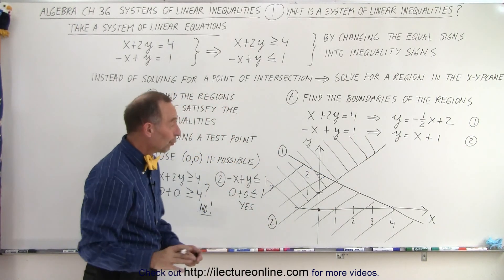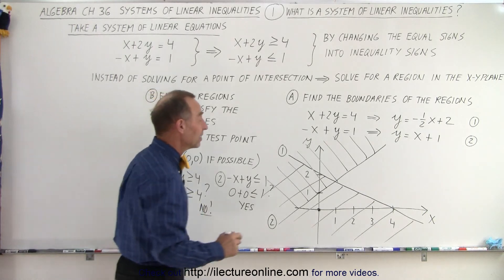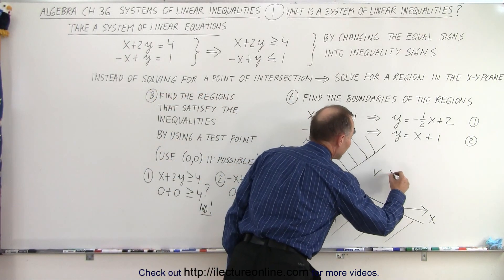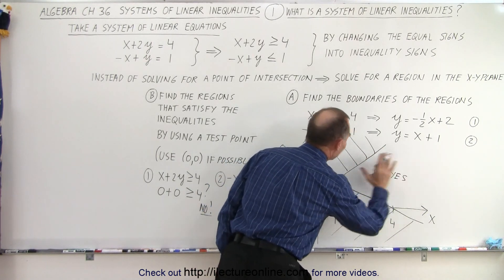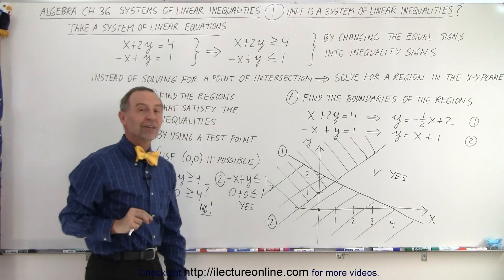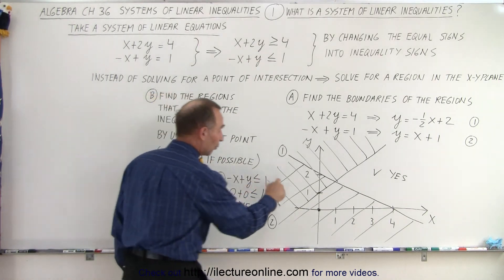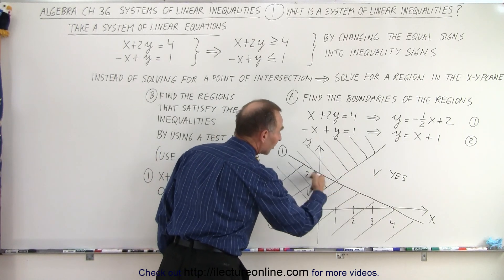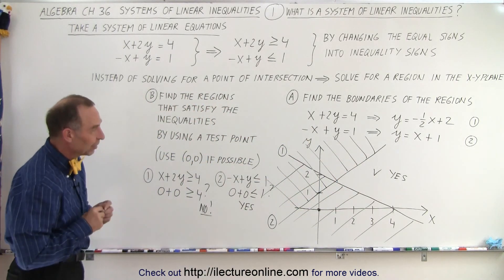And then the region we're looking for is the only region on the plane that has not been crossed out yet. This is the correct solution. So this is the region that satisfies both of these inequalities at the very same time because we got rid of all the other regions that do not. Remember, there were four regions. These three do not. This one does. That's the solution to our system of linear inequalities.